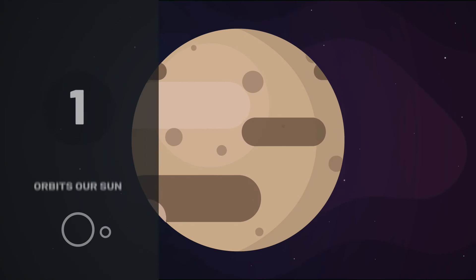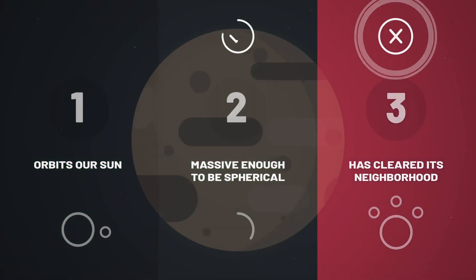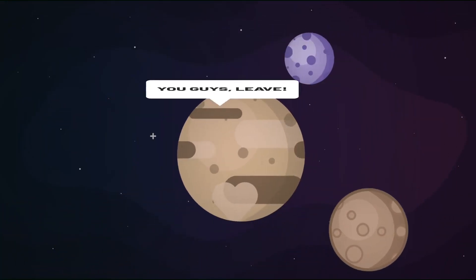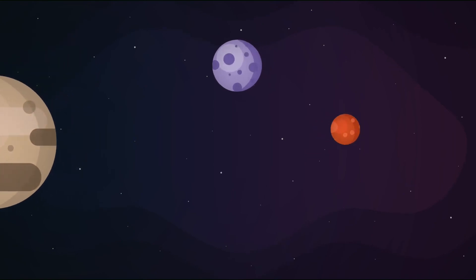And while Pluto checks off rules number one and two, it does not clear its own neighborhood. Even after hanging around the sun for more than four billion years, it hasn't moved its neighbors out.